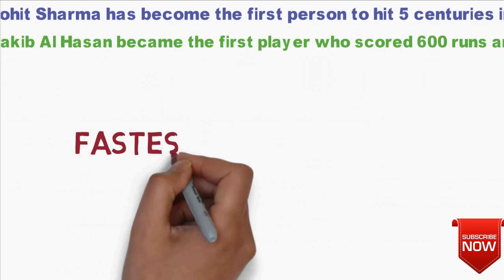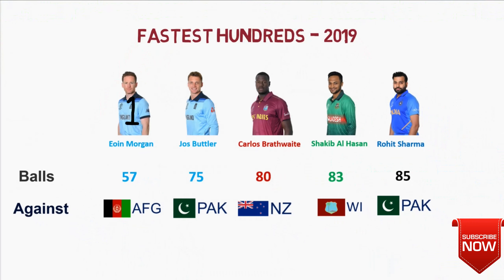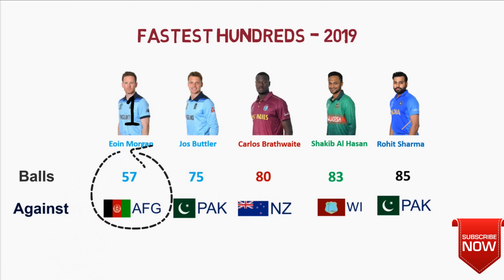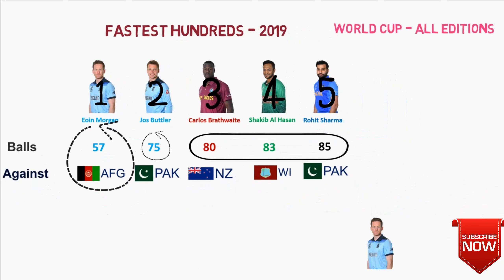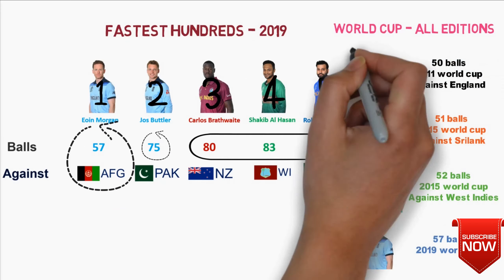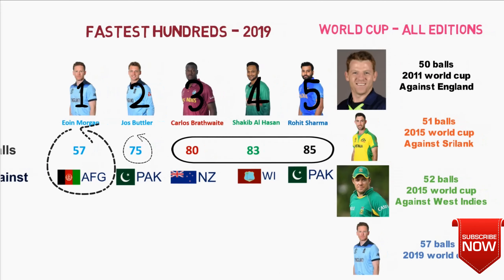The next category is Fastest 100. Eoin Morgan topped this list with his century against Afghanistan, which came in just 57 balls. Next are Jos Buttler in 75 balls, Carlos Brathwaite, Shakib Al Hasan, and Rohit Sharma who scored in 80 balls. After this World Cup, Morgan has become the fourth person in the all-time top list. The fastest 100 in World Cup history was hit in 50 balls by Ireland batsman Kevin O'Brien against England in the 2011 World Cup.